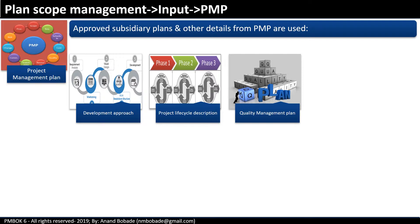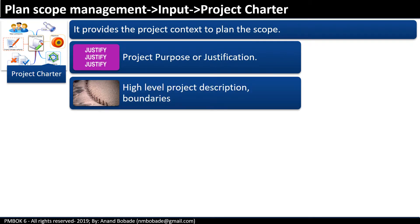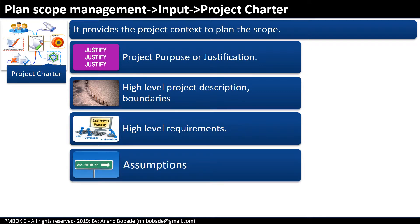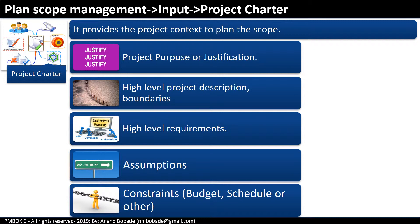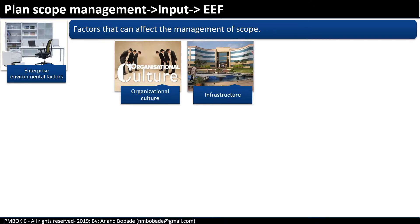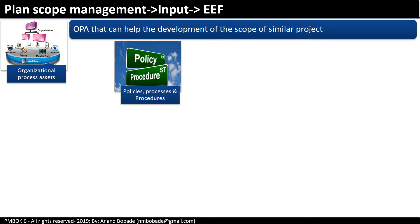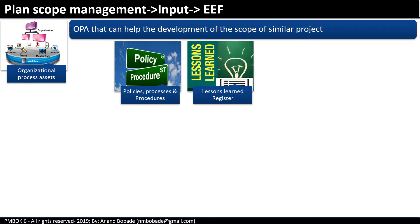The scope covers the completeness of the work, but the quality management plan covers the correctness of the work. The project charter provides the project context to plan the scope. Relevant parts include: project purpose or justification, high-level project description, boundaries, high-level requirements, assumptions, and constraints related to budget, schedule, or other areas. An organization's culture and infrastructure are among the enterprise environmental factors that can affect scope management. Organizational process assets such as policies, procedures, historical information and lessons learned repositories may help guide the development of a scope management plan.